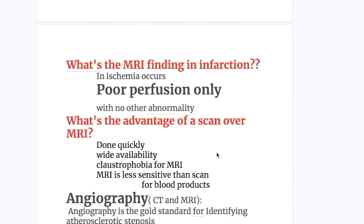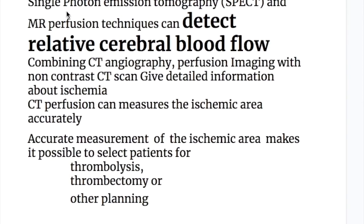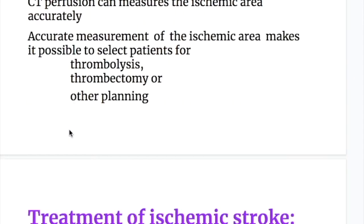In ischemia, MRI shows poor perfusion only with no other abnormalities. Xenon CT and PET scan can quantify cerebral blood flow and are useful for determining arterial stenosis and planning revascularization. Single photon emission tomography and MR perfusion techniques detect relative cerebral blood flow. Combining CT angiography perfusion imaging with non-contrast CT gives detailed information about ischemia, and CT perfusion can measure the ischemic area accurately to select patients for thrombolysis, thrombectomy, or other planning.